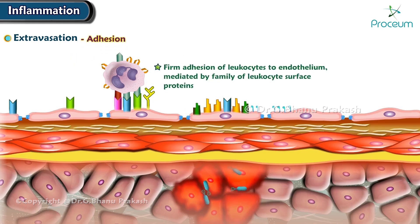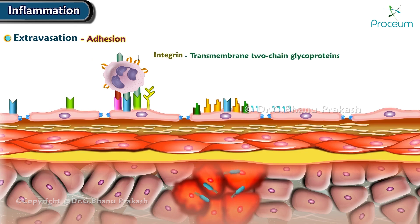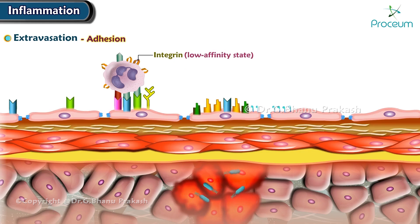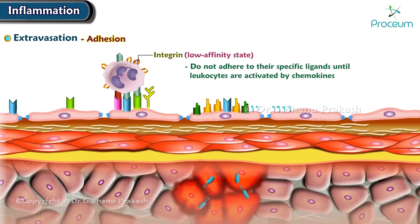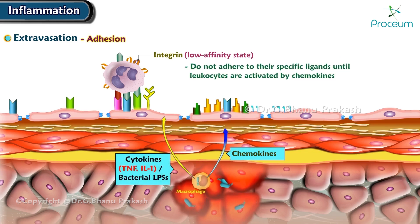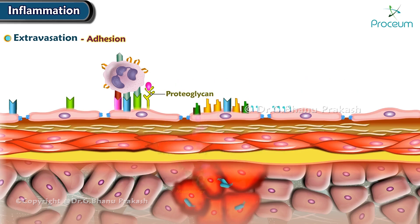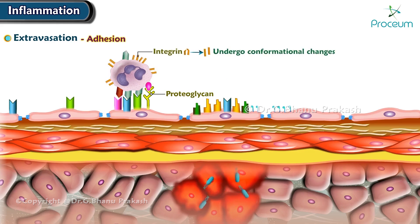Now let's talk about adhesion. Firm adhesion of leukocytes to endothelium is mediated by a family of leukocyte surface proteins called integrins — transmembrane two-chain glycoproteins that mediate the adhesion of leukocytes to endothelium and of various cells to the extracellular matrix. In a low-affinity form, they are normally expressed on leukocyte plasma membranes and do not adhere to their specific ligands until the leukocytes are activated by chemokines. Chemokines are chemoattractant cytokines that bind to endothelial cell proteoglycans and are displayed at high concentrations on the endothelial surface. When rolling leukocytes encounter the displayed chemokines, cells are activated and their integrins undergo conformational changes and cluster together, converting to a high-affinity form.